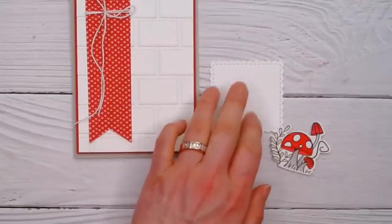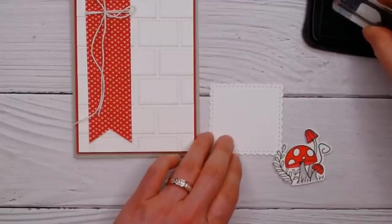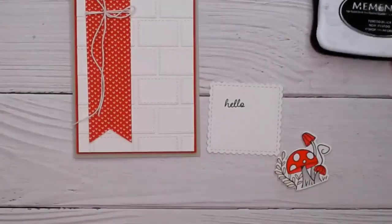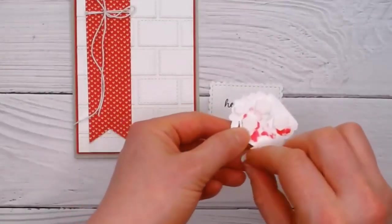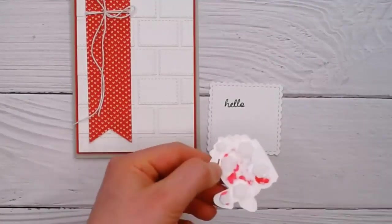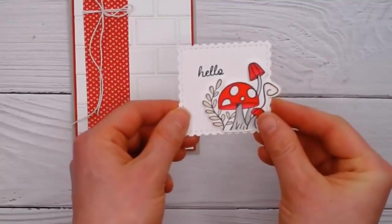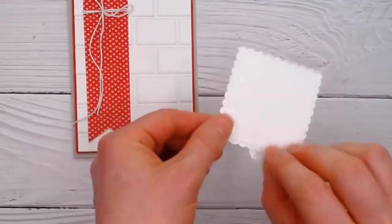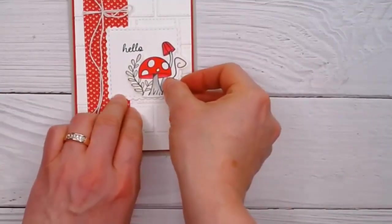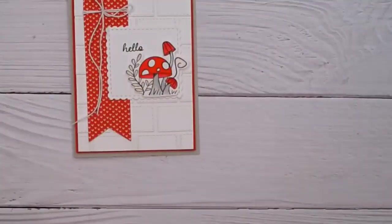Now I'm going to stamp my hello on here before I put my toadstool on, and the hello is also from this set. I'll put that kind of up here in the corner and I've just used Memento Black for that. Then I've put dimensionals on the back of the mushrooms. If you're cutting it out, you might as well put it on with dimensionals so that you get that full effect of it being a separate piece. And then I've even had it off the edge there so that you can see it's a separate piece. And then we'll go ahead and put that onto our card front.